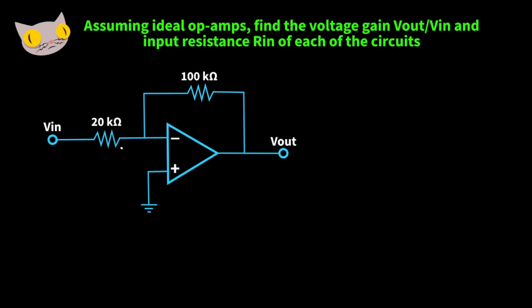Here's our first circuit. From the concept of the virtual ground, the potential at the inverting terminal is equal to the potential at the non-inverting terminal, so V positive equals V negative. The voltage at the non-inverting terminal is zero, therefore both terminals are zero. The current is flowing in this direction, so let's find the voltage gain.